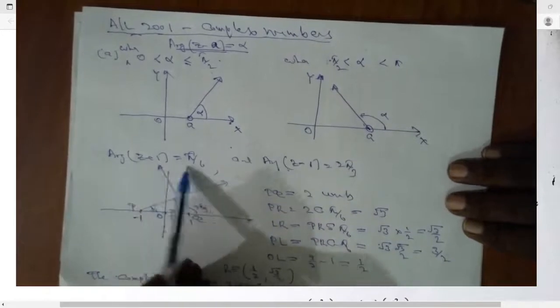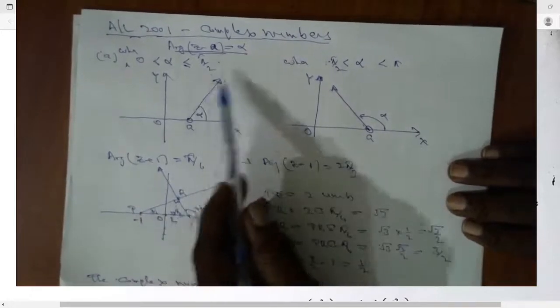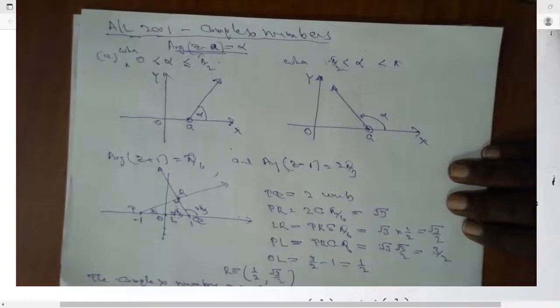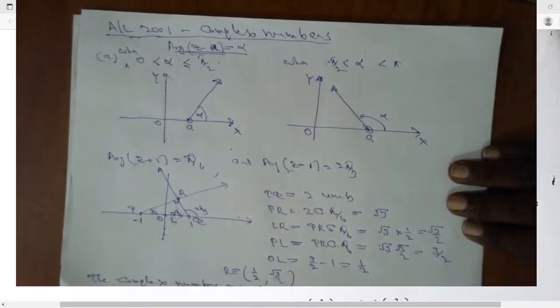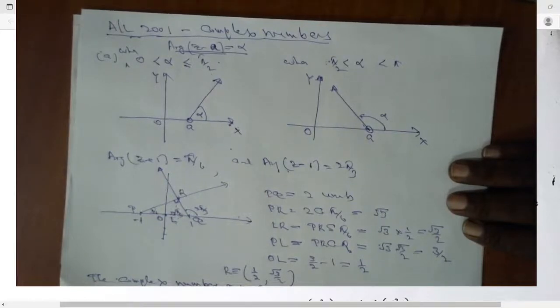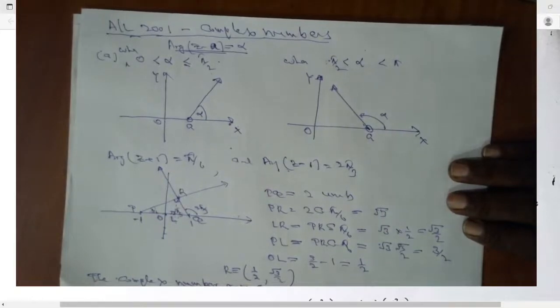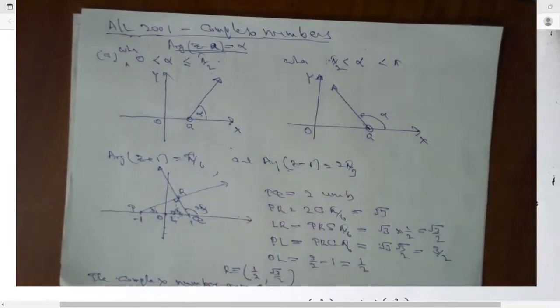But they have considered two cases when alpha is acute angle and alpha is obtuse angle. I don't know why they have not considered cases of A, but A also they can consider plus A and minus, when A is positive and when A is negative.